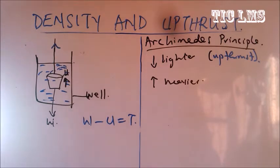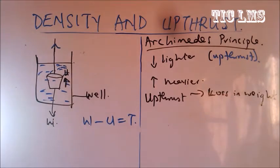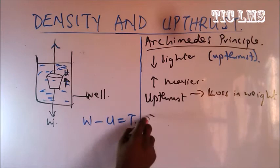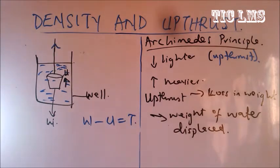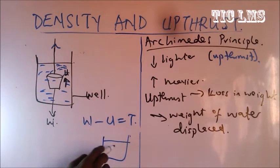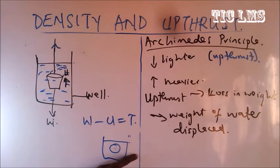The upthrust is known as a loss in weight because it makes the bucket appear lighter and easier to pull up. It is also referred to as the weight of water displaced. So upthrust equals loss in weight, and also equals weight of water displaced. When a stone is thrown inside water, it displaces its own volume, and the weight of that displaced water equals the upthrust the water exerts on the stone.